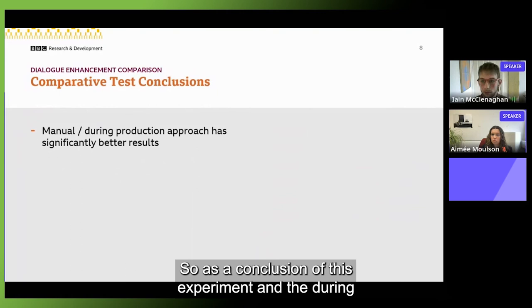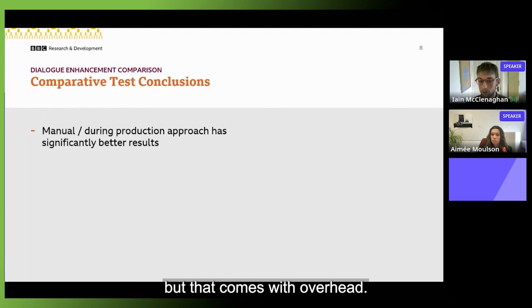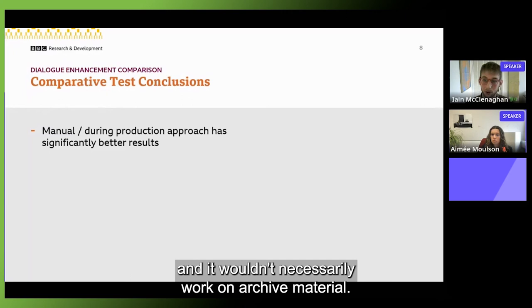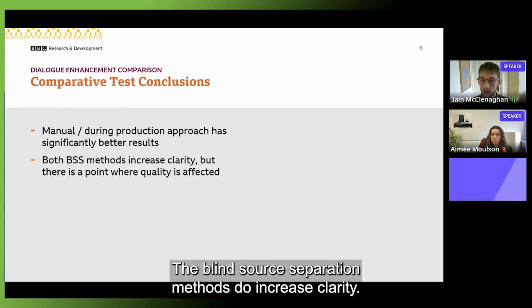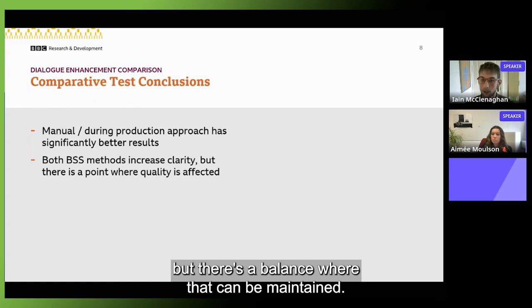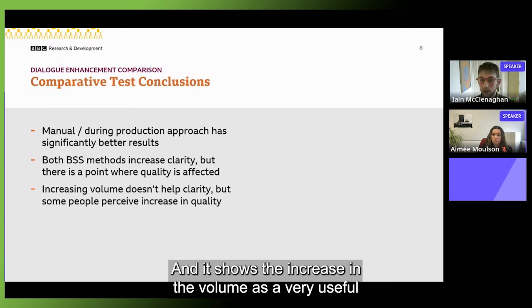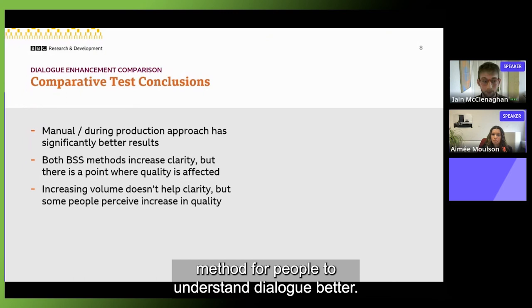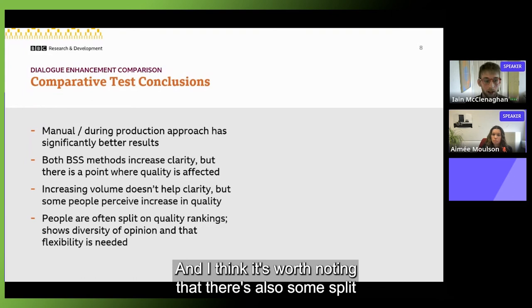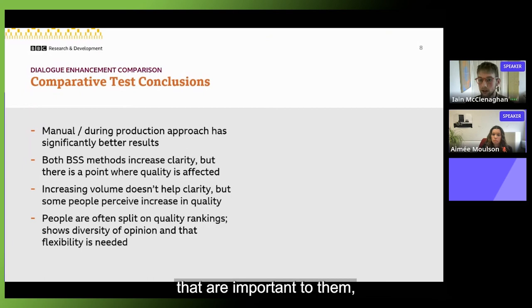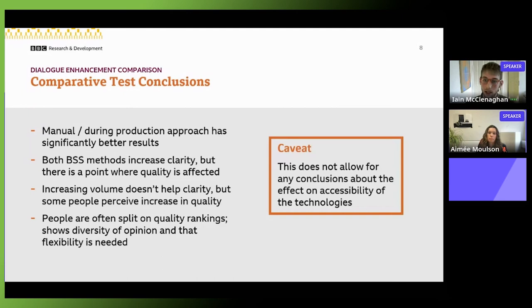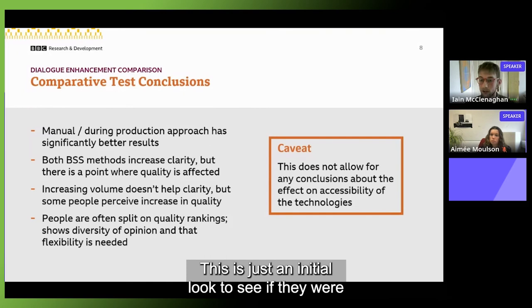So as a conclusion of this experiment, the during production approach does have significantly better results but that comes with overhead. You have to get somebody to do all of that and it won't necessarily work on archive material. The blind source separation methods do increase clarity. There can be a risk of affecting quality but there's a balance where that can be maintained. It shows that increasing the volume isn't a very useful method for people to understand dialogue better, but some people do perceive an increase in quality. And I think it's worth noting that there's also some split on how people rank quality. People have different things that are important to them and it shows that you need to be flexible in however you deliver something like this. The same settings aren't going to please everybody or be appropriate for everybody. I want to make a caveat here that this experiment isn't looking at accessibility. This is just an initial look to see if they were differentiable from nothing and my second experiment is looking more directly at accessibility.